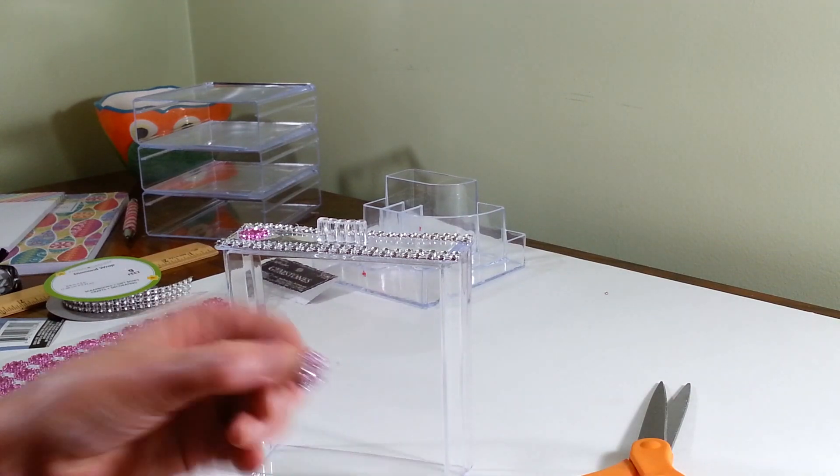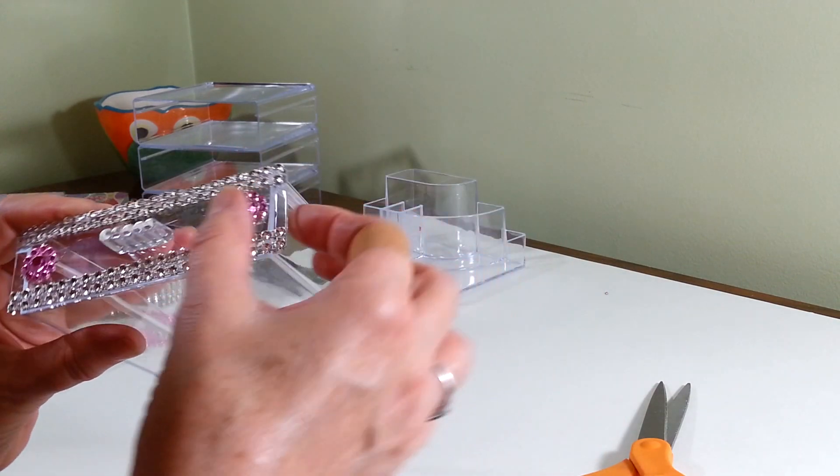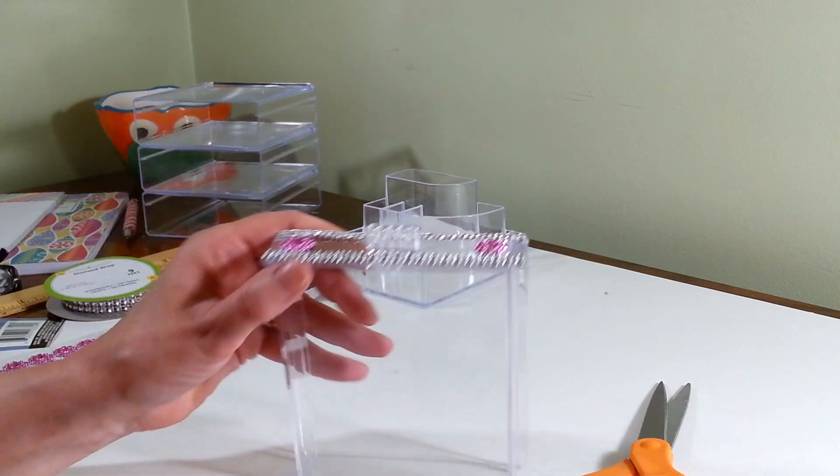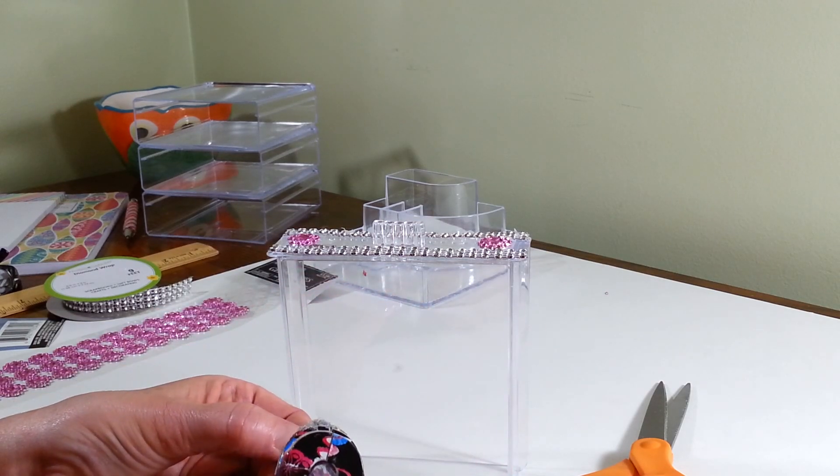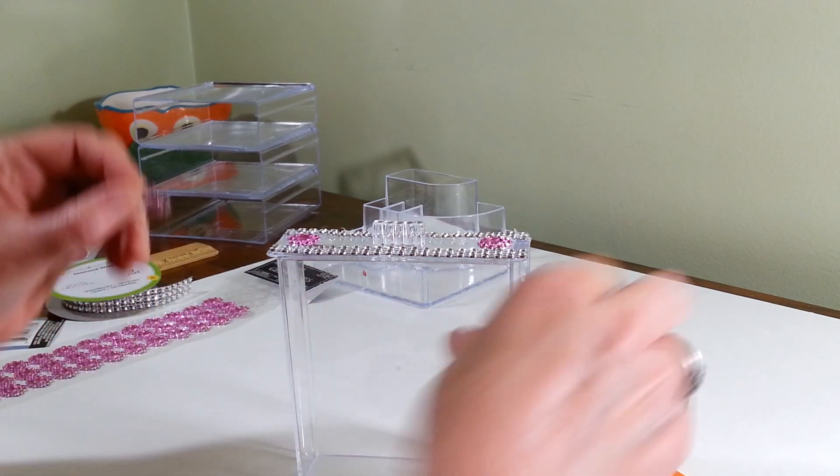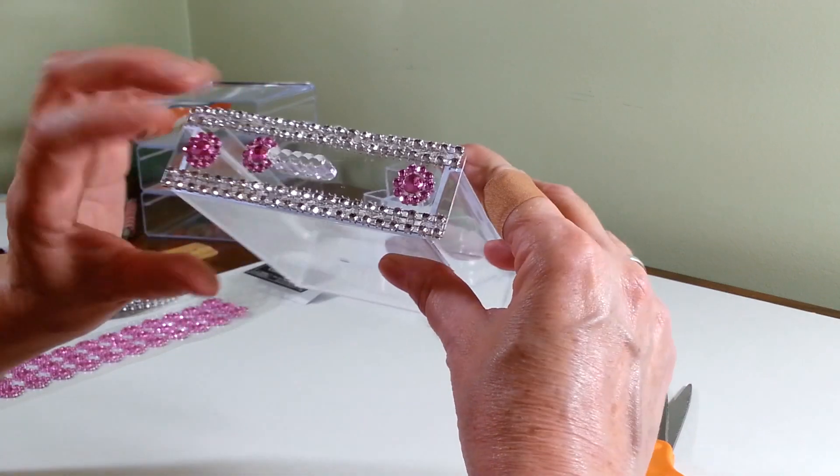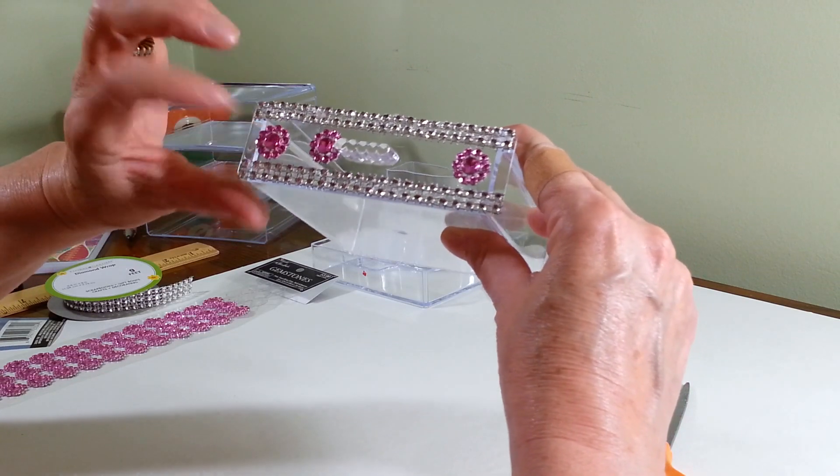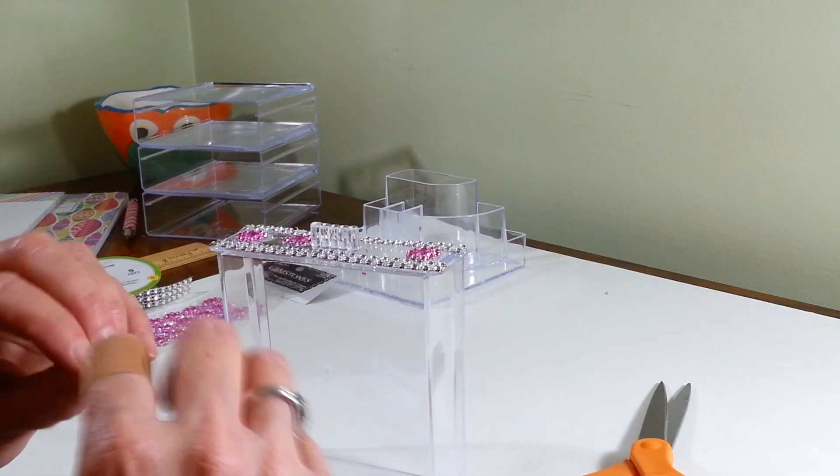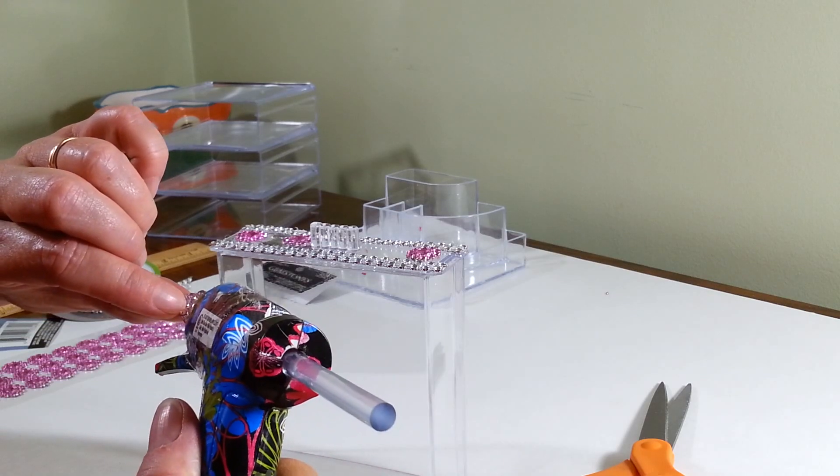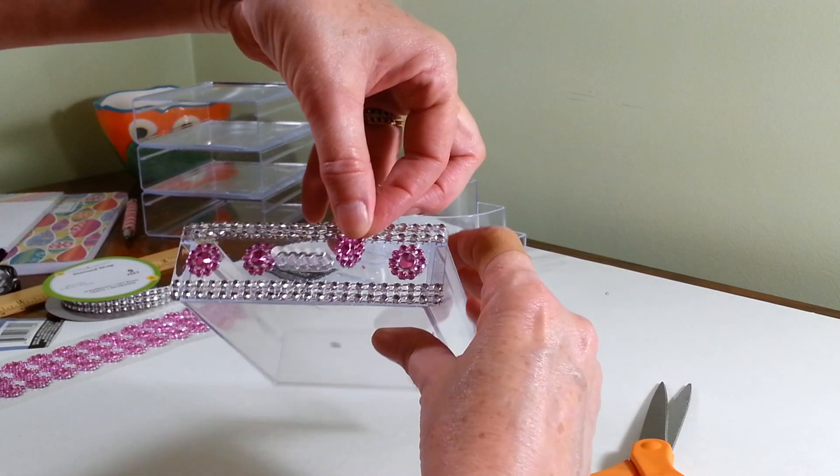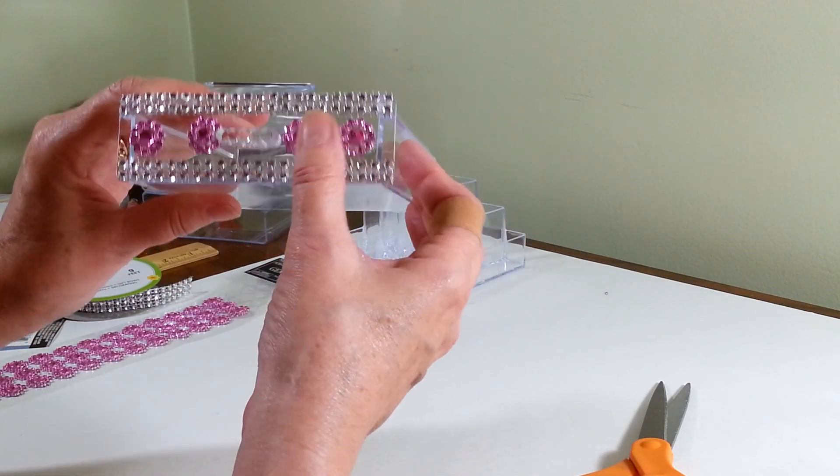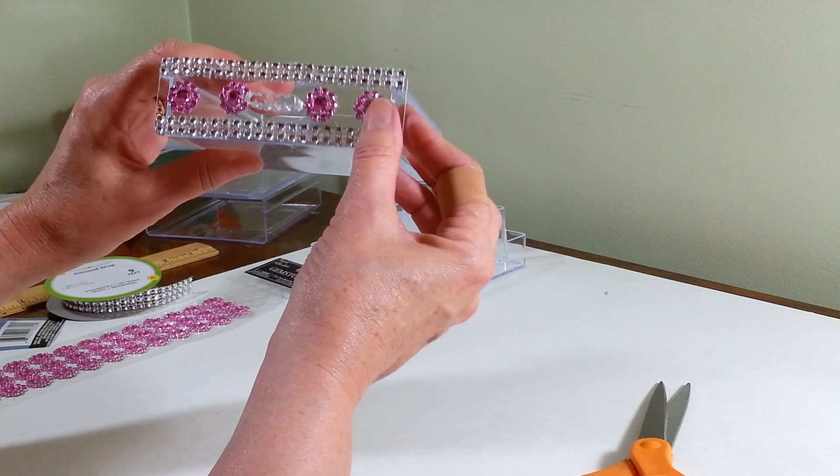Same thing on the other side, and then two more right next to the little pull tab here. It's going to put right up against there—seems to come out pretty even. And then one on the other side. There's your drawers.